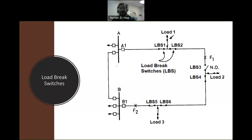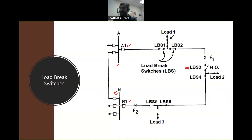This is a typical distribution system. We have two buses — bus A and bus B — and three loads: load 1, load 2, and load 3. We have six load brake switches from LBS1 to LBS6, all of them closed except LBS3, which is normally open. We also have two circuit breakers, A1 and B1, on overhead feeder lines.